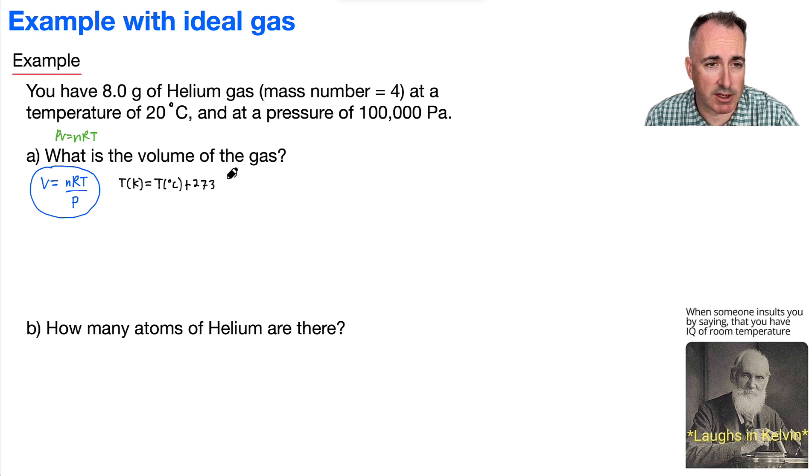So that means in this case I can say the temperature will be 20 plus 273, which means it's going to be 293 Kelvin. That's good. Now we have our temperature.